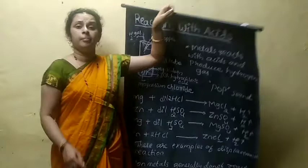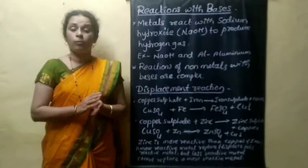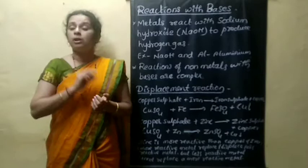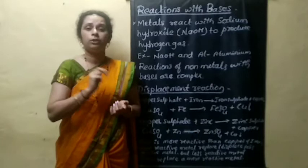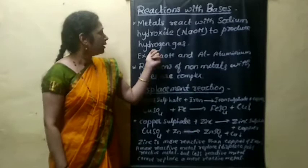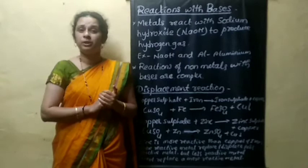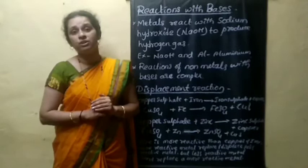Next we will discuss reactions of metals and non-metals with bases. For this, consider one experiment: take NaOH crystals or pellets, dissolve two or three pieces to make a solution, and take 5 ml of that solution in a test tube. Then add small pieces of aluminum foil to it. When NaOH and aluminum foil react, hydrogen gas is also released.